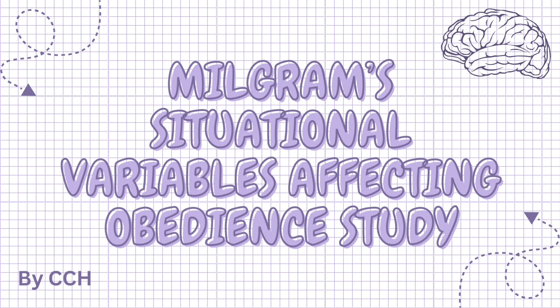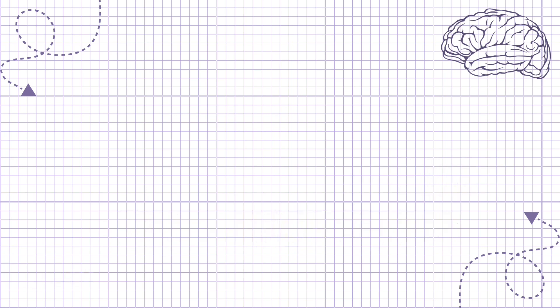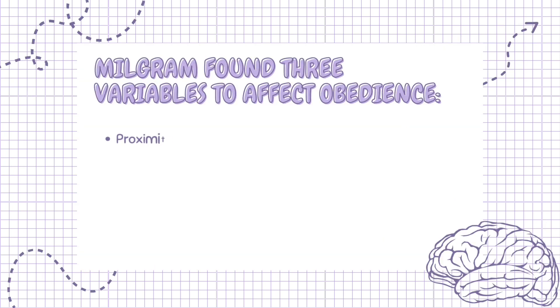I hope you enjoy this video and find it helpful. Let's get started. Milgram found three variables to affect obedience: proximity, location, and uniform.